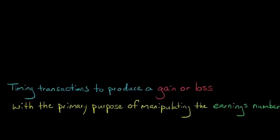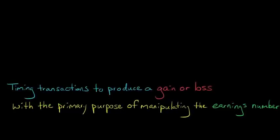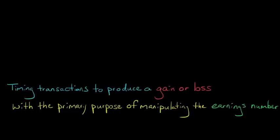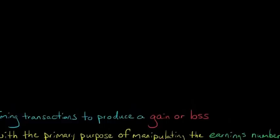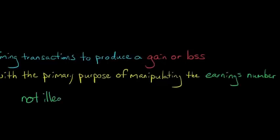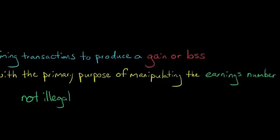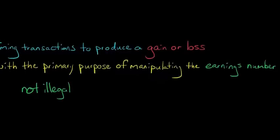Let's start with the definition. You're timing a transaction, some sale of an asset or something like that, to create a gain or loss with the main purpose not being economic rationale, but really just to manipulate the earnings number. You're trying to bump up earnings or, in some cases, bump it down a little bit. It's important to note this is not necessarily illegal. We're not talking about firms engaging in outright fraud. That's a different discussion.